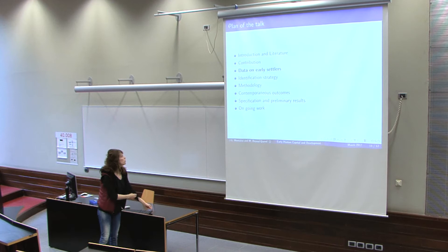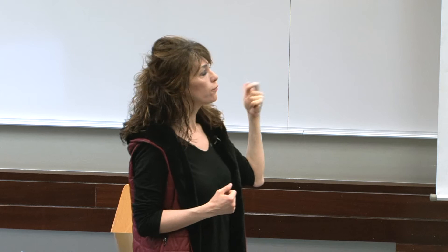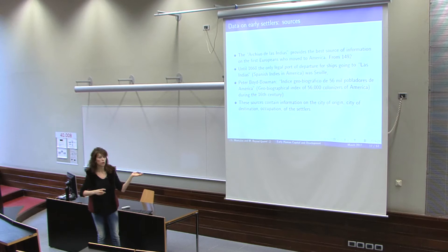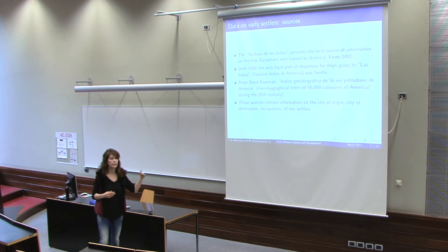Where does the data come from? We discovered there is a lot of information in the Archivo de las Indias, an archive in Seville, which is the best source of information on Europeans who moved to America from 1492. Until 1608, the only legal port of departure to Latin America was Seville, which means that all travelers to Latin America were controlled there. The key work we use is by linguist Peter Boyd Bowman, who spent many years in the Archivo de las Indias working with this information and has data on those who really made it and arrived in Latin America.